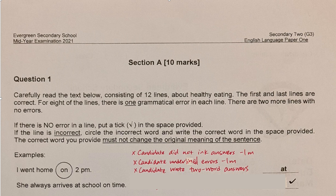Okay, without further ado, let's go. First, you need to carefully read the text below, consisting of 12 lines about healthy eating. The first and the last lines are correct. For 8 of the lines, there is 1 grammatical error in each line. There are 2 more lines with no errors. If there is no error in a line, put a tick in the space provided.